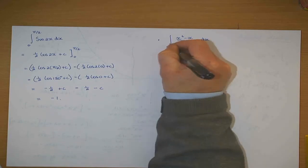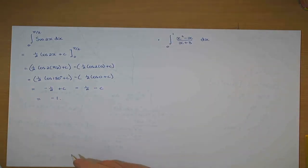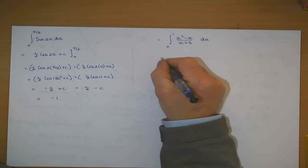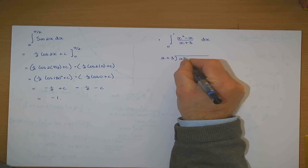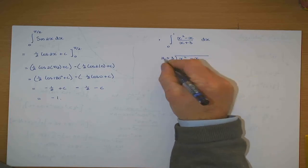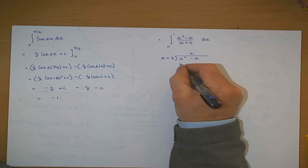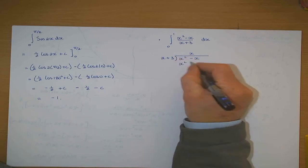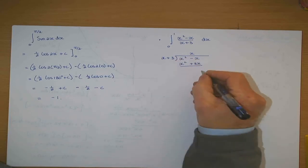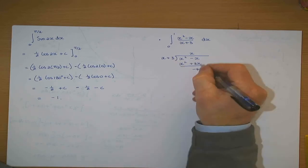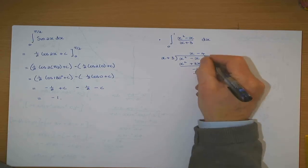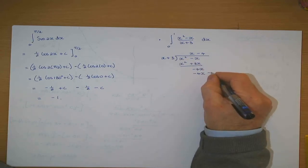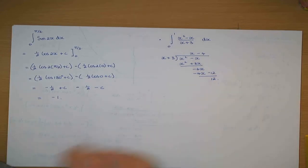It's the integral of a quotient, so you have to divide. You get x plus 3 and divide it into x squared minus x. x goes into x squared — x times x gives x squared; x times 3 gives 3x. Change the sign on the lower line and add: minus 4x. x goes into that minus 4 times; minus 4 times x gives minus 4x, minus 4 times 3 gives minus 12. Change the sign and add — so there is a remainder of 12. It doesn't divide in evenly.